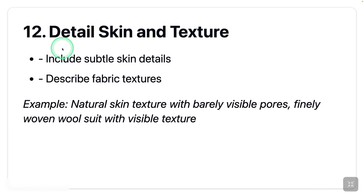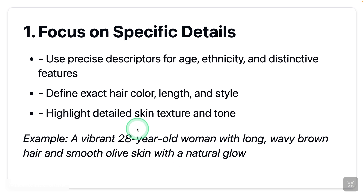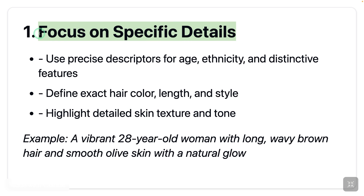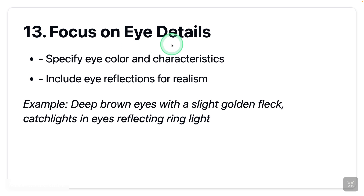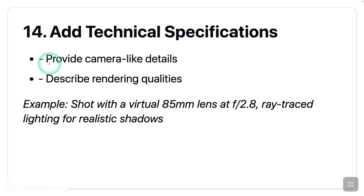Now getting into more detail regarding skin and texture. For the first point we didn't specifically mention skin texture and tone, but here we are defining that specific detail so we don't miss it. Next: focusing on eye details — specify eye color characteristics and include eye reflections for realism. Then finally, technical specifications like camera details and rendering quality. Here is an example: 'shot with a virtual 85mm lens at f/2.8, ray-traced lighting for realistic shadows.' Here is the final output.